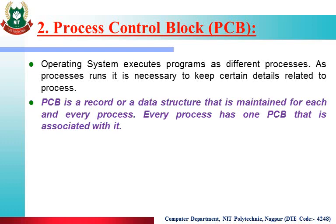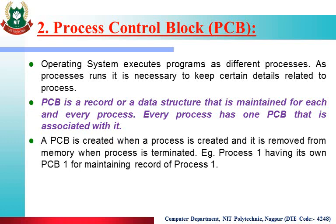PCB is a record or a data structure that is maintained for each and every process. Every process has one PCB associated with it — for example, process 1 has PCB1. A PCB is created when a process is created, and it is removed from memory when the process is terminated. When a process is created, its PCB is also created; when the process terminates, its PCB is also terminated. Process 1 has its own PCB1 for maintaining its record. When process 1 terminates, the related PCB1 is also terminated.